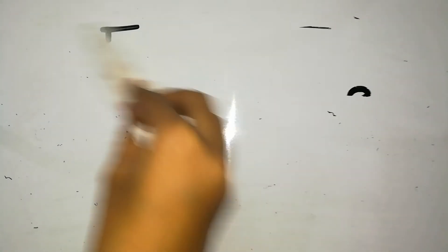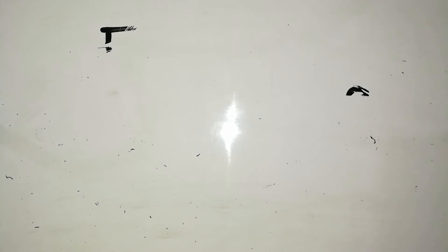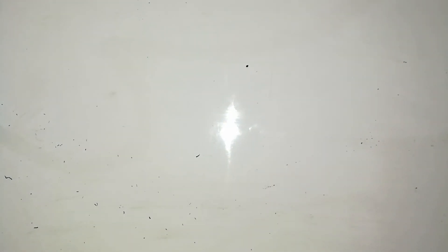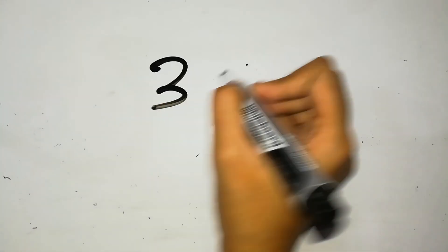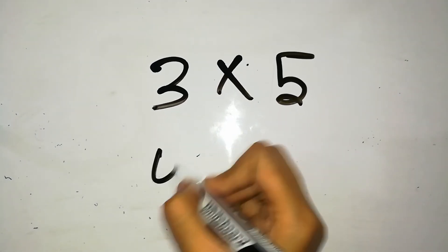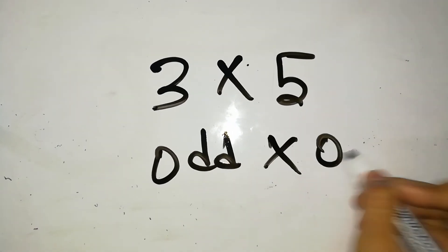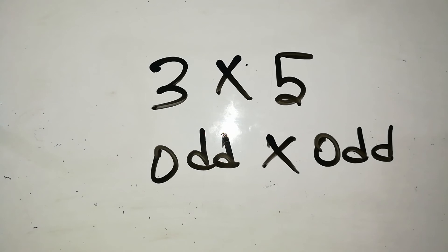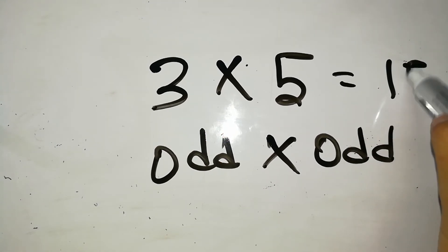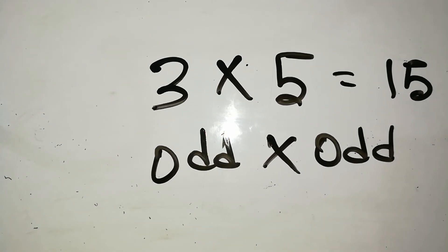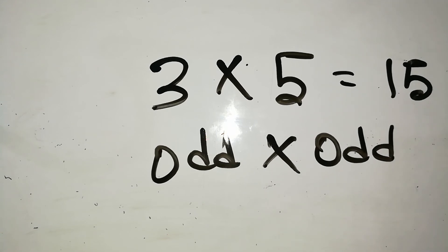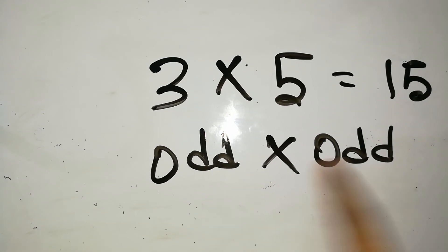But what if there is no even number to multiply with? If it's odd and odd, like 3 into 5, the value is 15, which is odd. Since there's no even number to multiply with, there is no scope for getting an even product. So you have to remember that odd into odd is always odd - it can never be even.